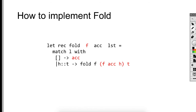How do we implement fold? Looking at the previous slide: fold takes a function, an accumulator, and a list as arguments. If the list is empty, it returns the accumulator. If the list is not empty, we apply that function to the accumulator and one item from the list — the head — and then use this value as the accumulator for the next iteration.